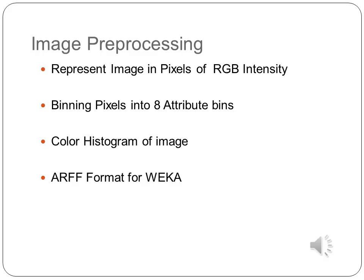Image preprocessing has several steps. First, we need to represent the image in pixels of RGB intensity. Then we need to bin the pixels into 8 attribute bins and derive the color histogram of the image. Finally, the image is represented in the ARFF format, which is given as input to Weka.